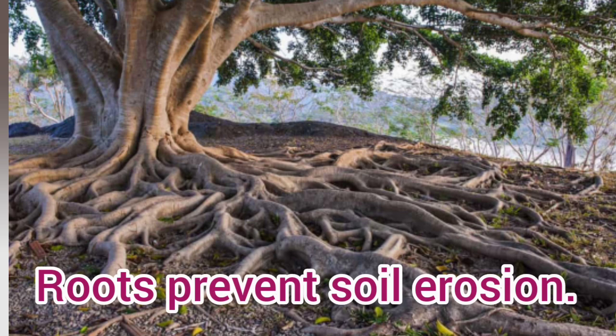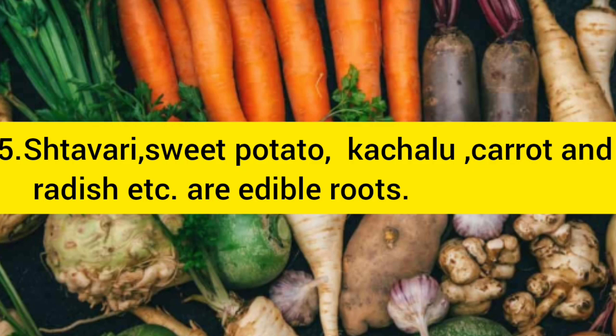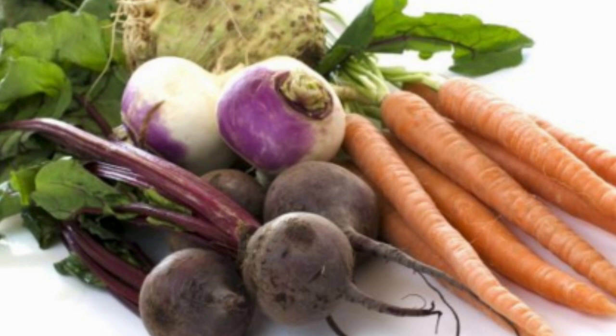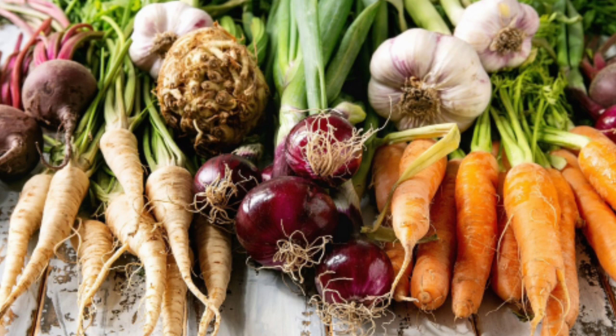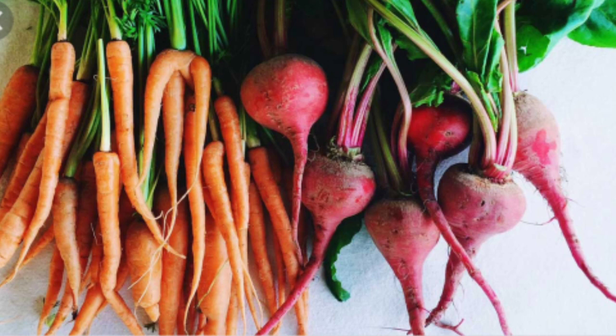Roots help to prevent soil erosion. Number 5 is: shatavari, sweet potato, kachalu, carrot, and radish are edible roots. Children, you must have eaten these roots in one form or another. Shatavari, sweet potato, carrot, and radish are the roots of different plants that are eaten by us, and all these roots are very important for our health.